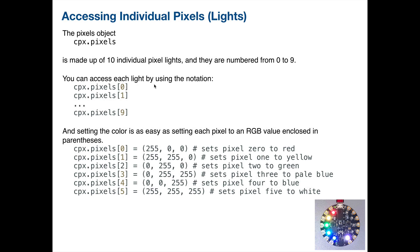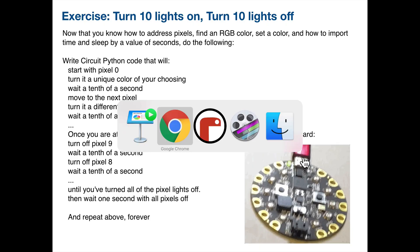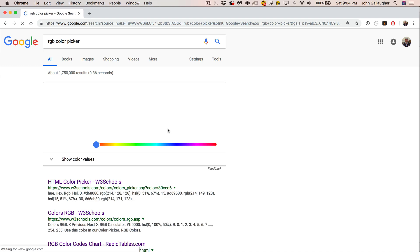Now we're going to have an exercise. What we want to do is turn the lights on and then turn the lights off, one at a time. You know how to address individual pixels as elements in the array using the square brackets. We're also going to have you find a color. Let's open up a browser — if you type 'RGB color picker' into Google, you'll see a little color picker tool you can use.